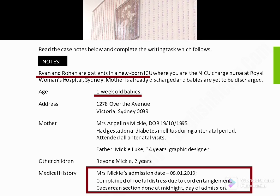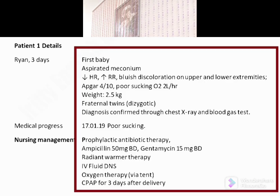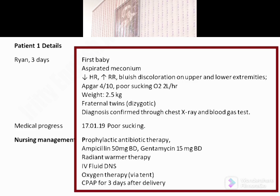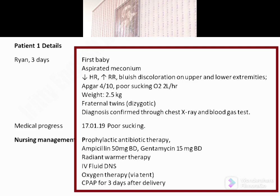The delivery date is 8/1/2019. The first baby is Ryan — today he is three days old. He aspirated meconium and has decreased heart rate, increased respiratory rate, and blue discoloration on upper and lower extremities. His APGAR score was 4 out of 10, poor sucking, and birth weight was 2.5 kg. They are fraternal twins. He was given oxygen therapy at 2 liters per hour. Today, 17 January 2019, the diagnosis for Ryan is poor sucking. Nursing management includes prophylactic antibiotic therapy with ampicillin 50 mg twice daily and gentamicin 15 mg twice daily, radiant warmer therapy, IV fluid DNS, and oxygen therapy via tent/CPAP for three days after delivery.